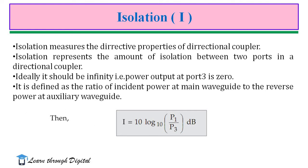Another parameter is isolation, represented as I, also expressed in decibels. Isolation measures the directional properties of the directional coupler and represents the amount of isolation between two ports. Ideally it should be infinity, meaning power output at port 3 is zero. It is defined as the ratio of incident power at the main waveguide to the reverse power at the auxiliary waveguide — the ratio of P1 to P3. I (dB) = 10 log₁₀(P1/P3), where P1 is the incident power and P3 is the reverse power.